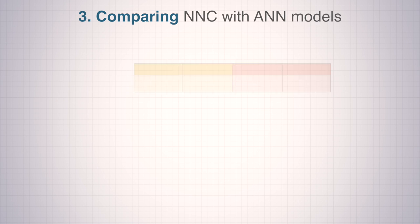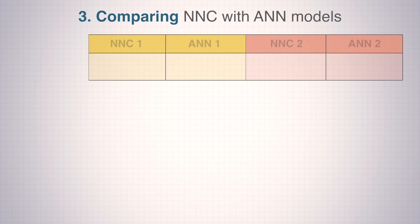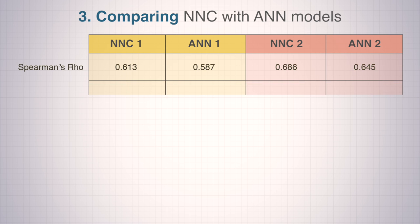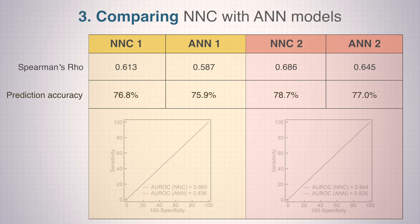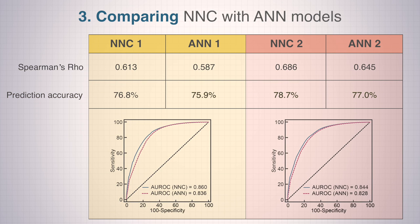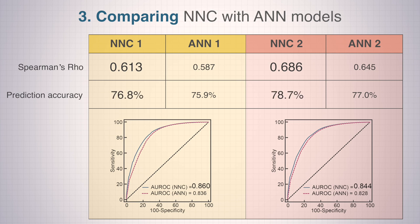We then compared the NNC models with corresponding ANN models. Both NNC models showed a significantly higher correlation between chemical structure and multi-P450 inhibition, and higher prediction accuracy.